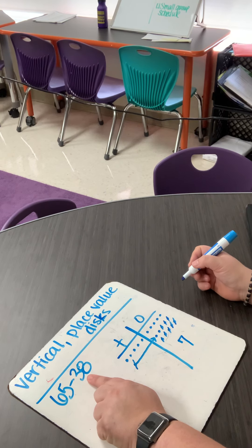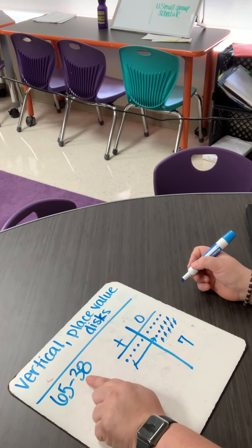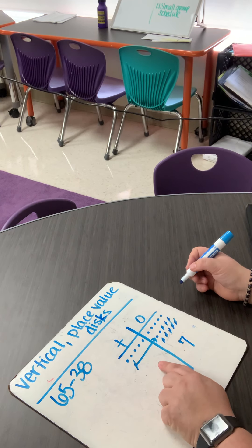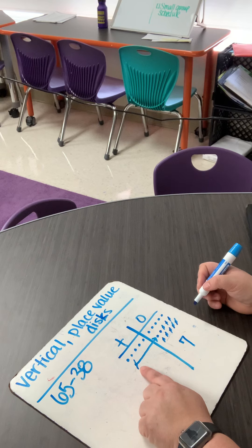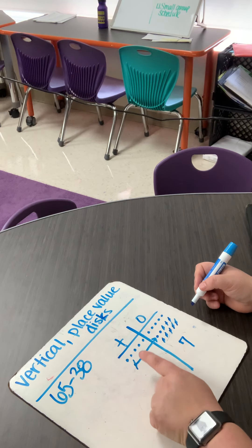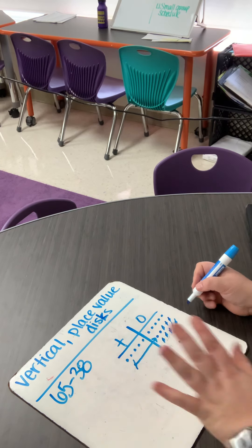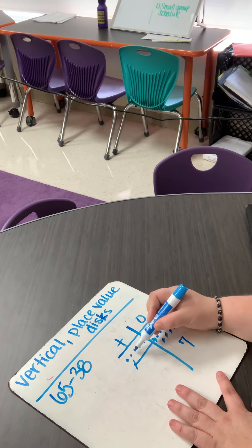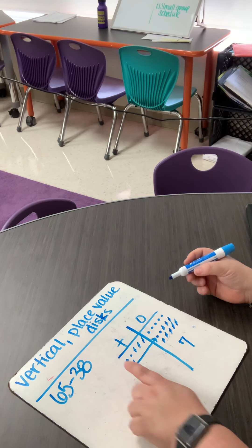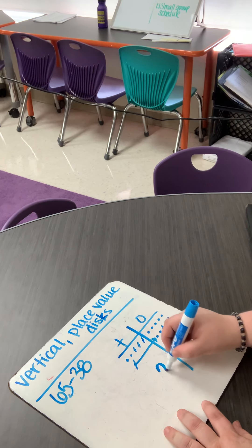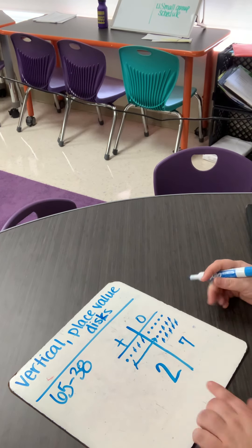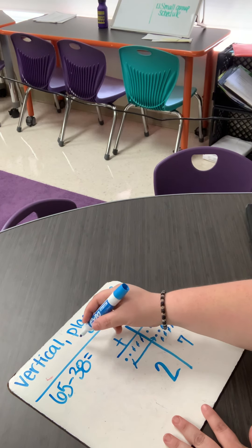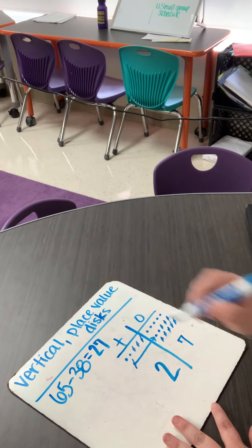Now I have to move over to my ten spot. I need to take away three tens from the tens place value. This one doesn't count towards my three because I had to have that for my ones place. So that doesn't count. So we're going to go one, two, three. Now I have two left over. All right. So I have twenty-seven. So I'm thinking sixty-five minus thirty-eight is twenty-seven.